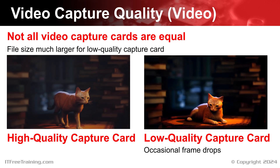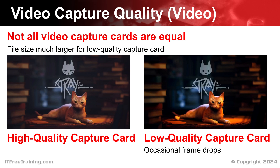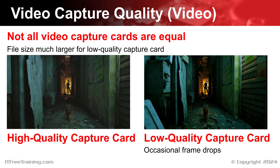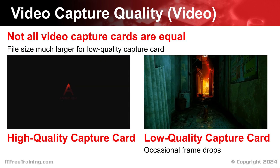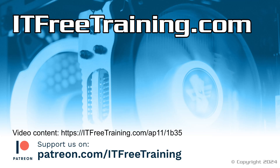All the video we capture — particularly 4K video — we re-encode to reduce the file size. Re-compressing the files reduces the raw video size by at least 50% without any noticeable quality reduction. That concludes this video on video capture cards. I hope this video has been informative. Until the next video, thank you for watching — I'll see you next time.